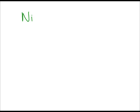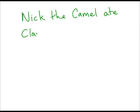Here's a little memory trick for helping you remember a few of the polyatomic ions. I know you're going to have them on your periodic table for grade 10, but as you get into more chemistry, it is expected that you know these things, and sometimes having little memory tricks can help. Here's a statement: 'Nick the camel ate clam supper in Phoenix.' This is the statement we're going to use as a mnemonic.